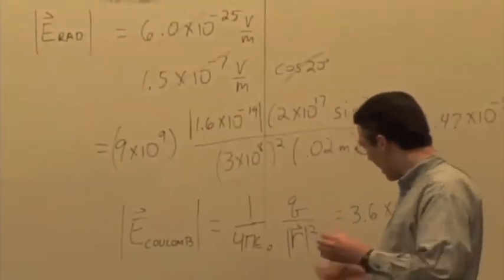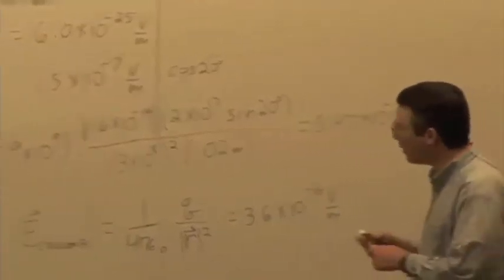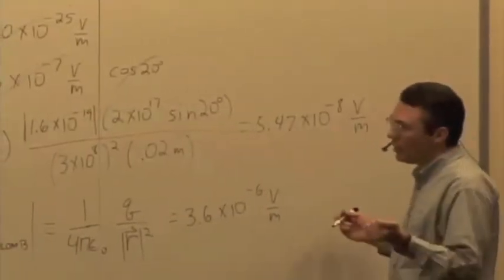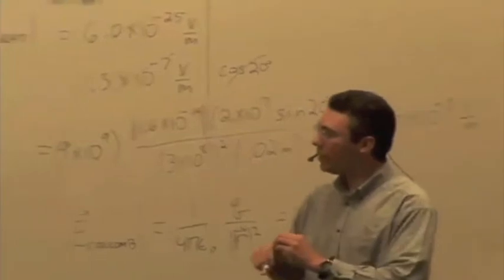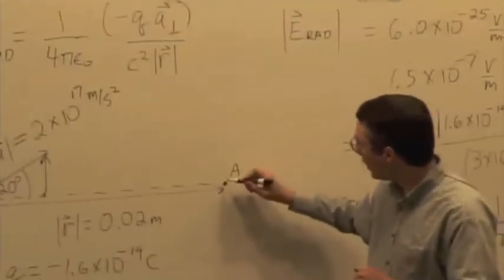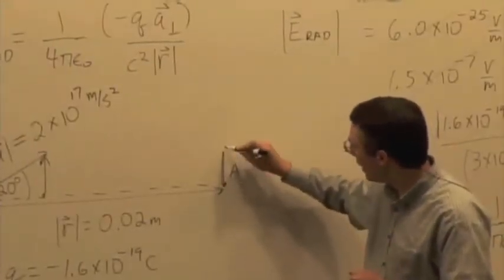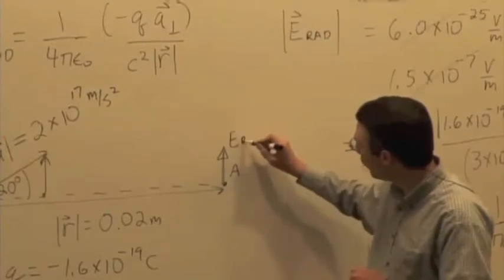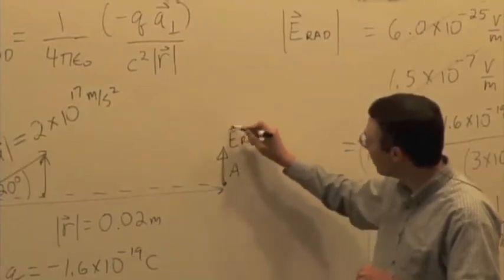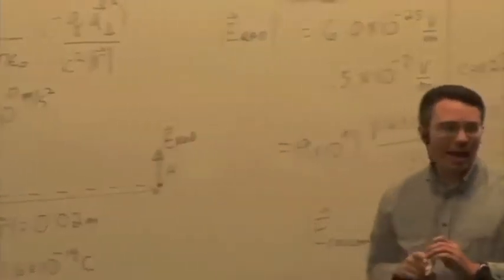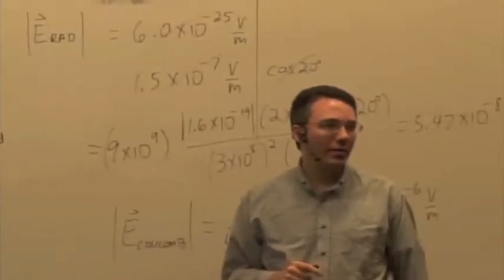Oh, by the way, before we go too far into this, we found, let's go back to this example for just a quick second. We found that the irradiated field when it reaches this point will be pointing that way. What's going to be the direction of the magnetic radiative field?